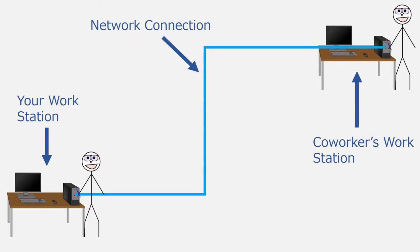Indeed, this is what countless organizations have chosen to do. Most companies and large organizations have some kind of computer network. An organization with a computer network enjoys many advantages over an organization with unconnected computers. For example, networked computers make it easier to access, distribute, and back up important information. They can provide users the flexibility to log into their workstation or into their network account from multiple locations. And networks allow users to connect individual workstations to some kind of central work hub, such as a printer and copy center or a conference room.